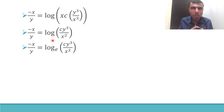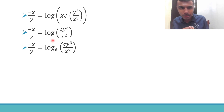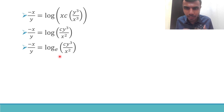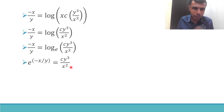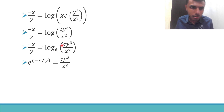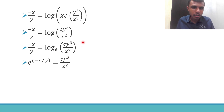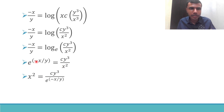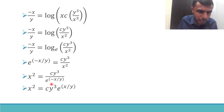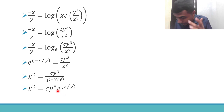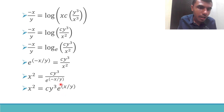Now log here is log to the base e. So I have: minus x/y equals log(cy³/x²). Converting from log form to exponential form, send e to the LHS: e^(minus x/y) equals cy³/x². Sending x² to the other side, and since it's e^(minus x/y) we get e^(x/y) in the denominator, so the final answer is x² = c·y³·e^(x/y).